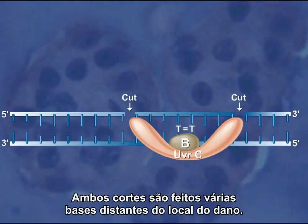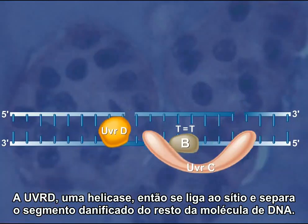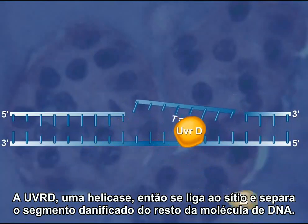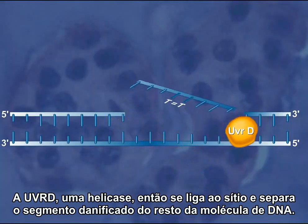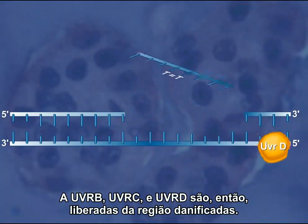Both cuts are several bases away from the damaged site. UVR-D, a helicase, then binds to the site and separates the segment of damaged strand from the rest of the DNA molecule. UVR-B, C, and D are then all released from the damaged region.